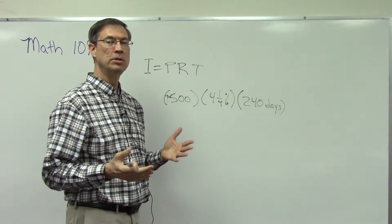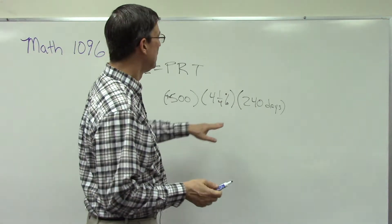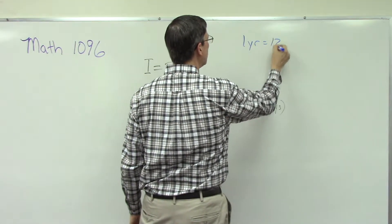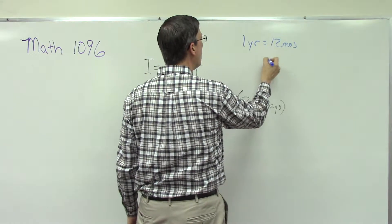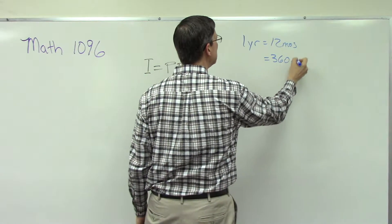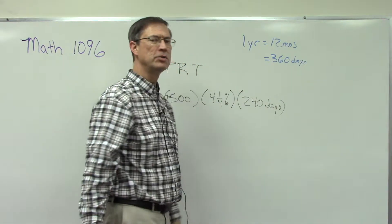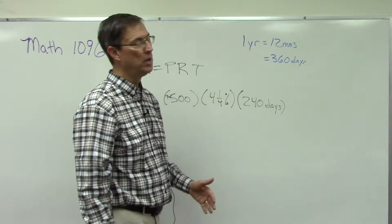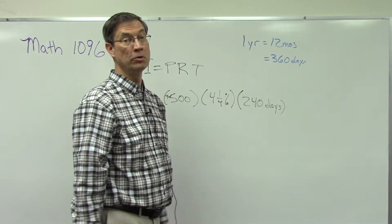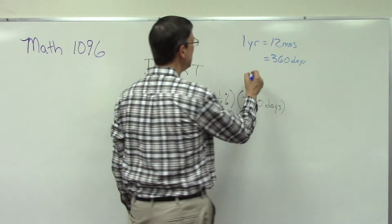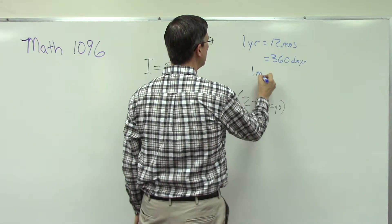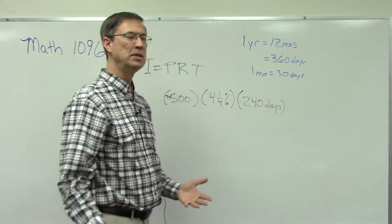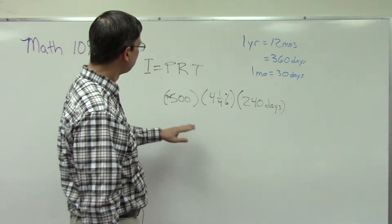In this PACE, it mentions that lending institutions like banks or loan companies will always consider one year to be 12 months or 360 days. You might think there are 365 days — and yes, some months have less than 30 days and some have more — but they just use a round number of 360. Every month is assumed to have 30 days, which makes the math a little easier.